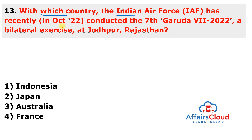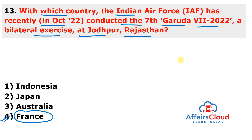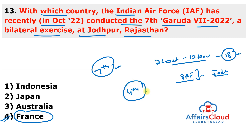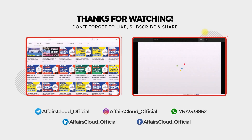With which country did the Indian Air Force recently conduct the seventh edition of Garuda 7 2022, a bilateral exercise at Jodhpur, Rajasthan? The answer is France. This exercise was conducted between 26th October and 12th November 2022 — an 18-day bilateral exercise between the Indian Air Force and the French Air and Space Force at the Air Force Station in Jodhpur, Rajasthan. It is the seventh edition of the Garuda exercise and the fourth time India has hosted it, previously in 2003, 2006, 2014, and now 2022.